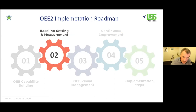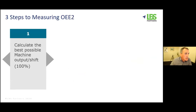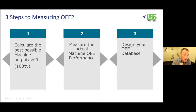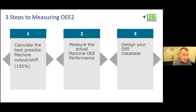Moving on to baseline setting and measurement. In this section, where we're just starting to measure, we want to achieve three things: we want to know what 100% machine output is — we have to define perfect and know that number. Once we have that number, we can see what the machine is actually performing — that's our OEE 2 number. And thirdly, we want to commit those shift numbers to a database so we can see trends and facilitate the continuous improvement effort. The database design is critical.